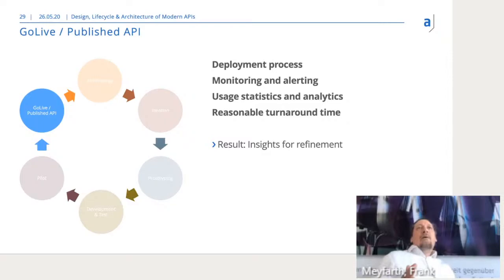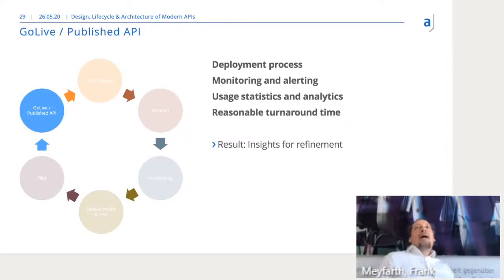Then you start all over again. Often you don't restart with API strategy but go directly from go-live to ideation. If an API is published, you should more or less immediately start on refinement — always look at your APIs and see what can be done better. Because the others will do that too. If you don't, others will have better APIs for the job, and customers will use those instead. This really is an ongoing process.